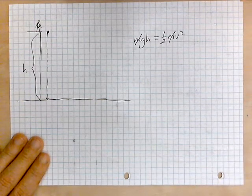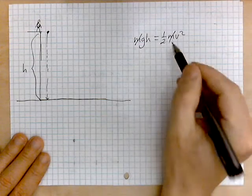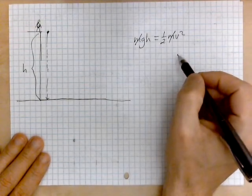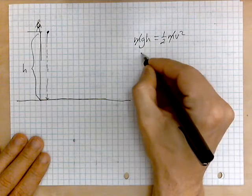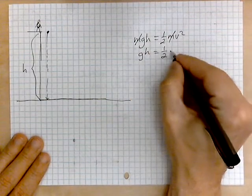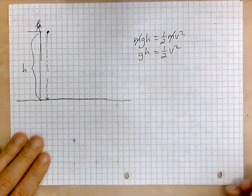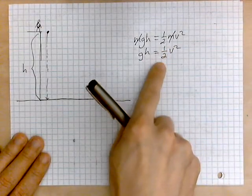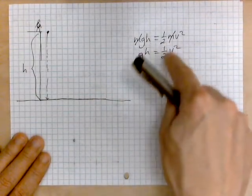So let's take a look. Let's solve this for V. The way to do it is as follows. Let's rewrite this without the M's as GH equals one-half v squared. Now we will multiply both sides by two over one so as to get rid of the one over two on the right side.